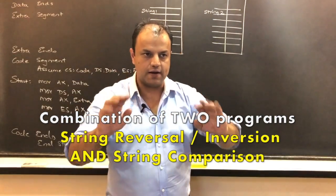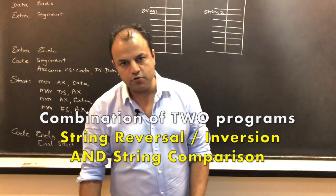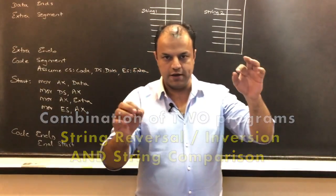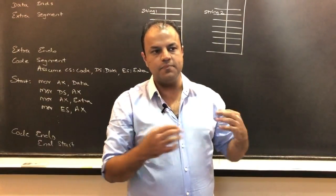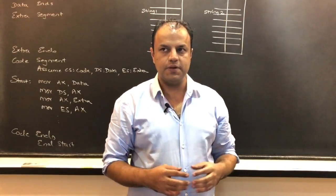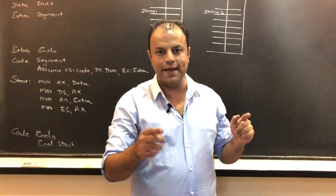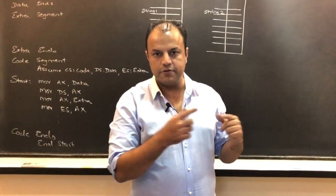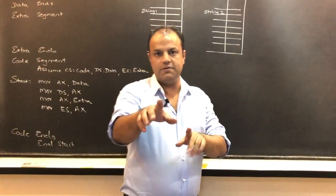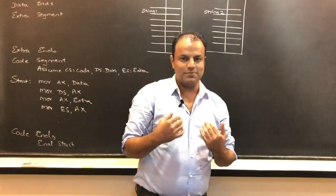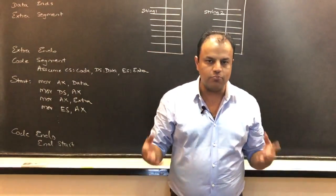Now, let's start. First of all, what do you mean by a palindrome? A palindrome means a string which is forward and reverse the same, like 'madam' — M-A-D-A-M — or 'civic' — C-I-V-I-C — or 'Nitin'. No offense, I'm just using it as an example. So, these are palindromes.